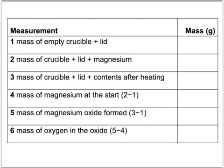Let's shove in some example results. If the mass of the empty crucible and lid was 36.25 grams and then with the magnesium in as well it was 36.72, then the mass of the magnesium at the start would be the difference between those two, which is 0.47 grams.